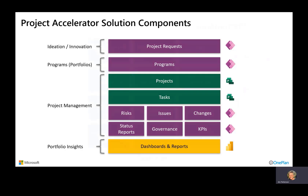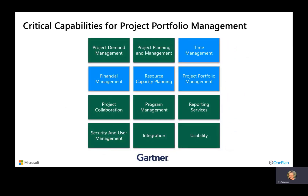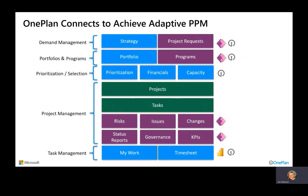This is good for some, but in the PPM marketplace there are many mature companies looking to do more things than what's in the Accelerator, and the Gartner Group talks about those things. OnePlan, extending the Accelerator with its own IP, adds things like strategies, portfolios, prioritization, and what-if analysis, financials and capacity planning, as well as the ability for team members to fill out and respond with status in their My Work Area or their timesheets.